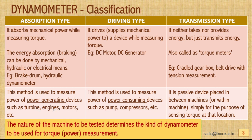Driving type dynamometers drive or supply mechanical power to a device while measuring torque. Examples include DC motors or DC generators used as driving type dynamometers. This kind of dynamometer is used to measure power of power-consuming devices such as pumps and compressors.